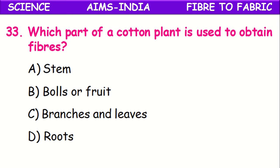Which part of a cotton plant is used to obtain fibers? Cotton fiber is obtained from the fruit — the cotton balls. Cotton balls or cotton fruits yield cotton fiber.